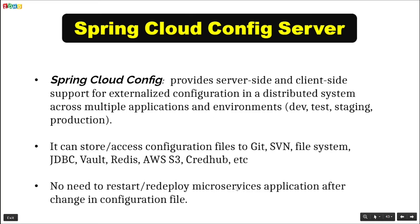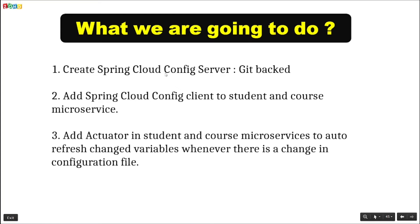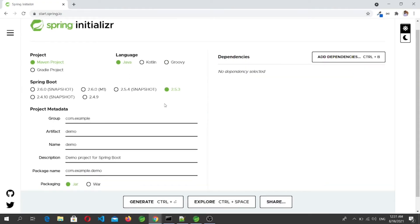First, we will create a Spring Cloud Config Server which will be Git-backed. In the second video we will add a Spring Cloud Config client to the student and course microservices, and we'll see how those microservices get their property values from the config server. In the third video we will add Actuator to auto-refresh changed variables whenever there is a change in the configuration file. Let's start and create the Spring Cloud Config Server.